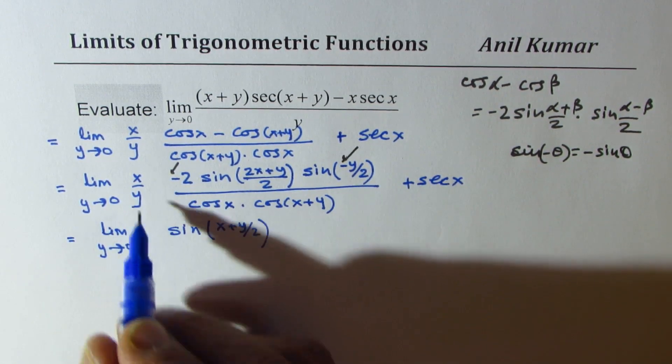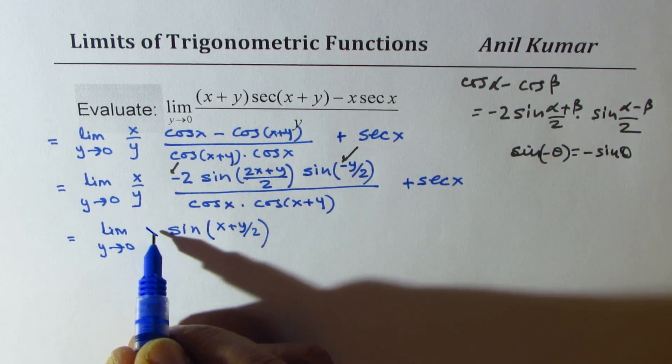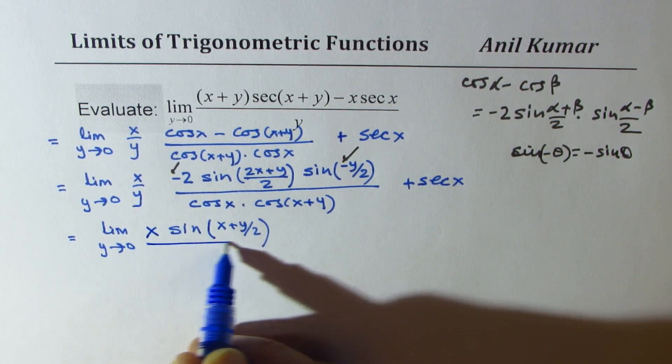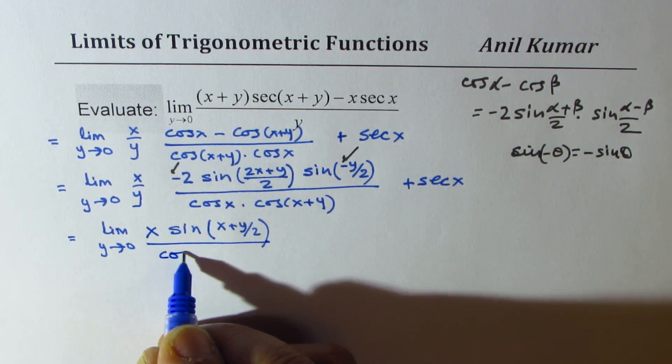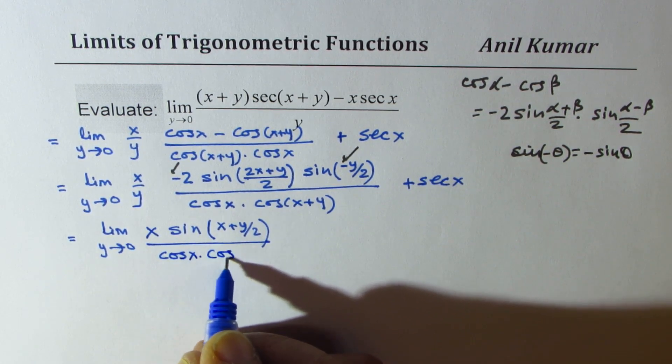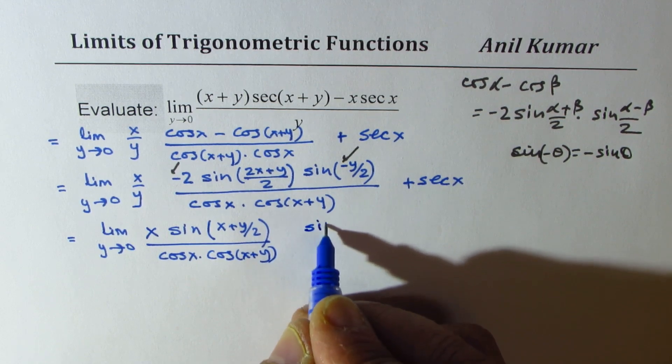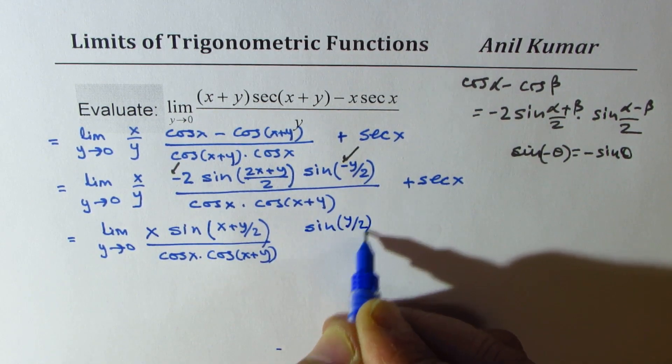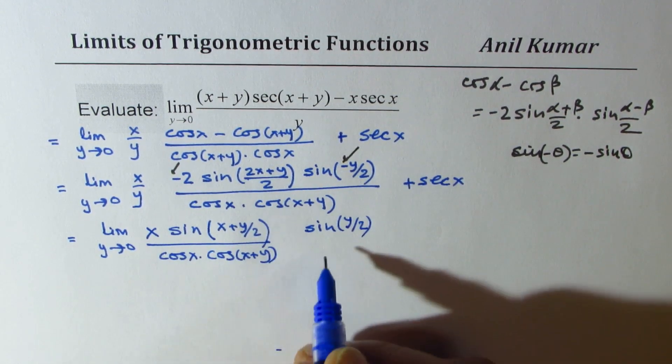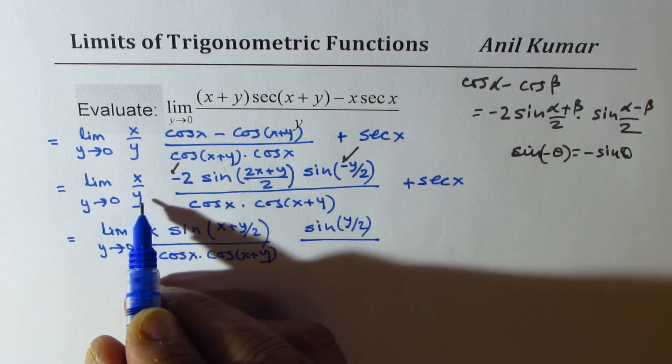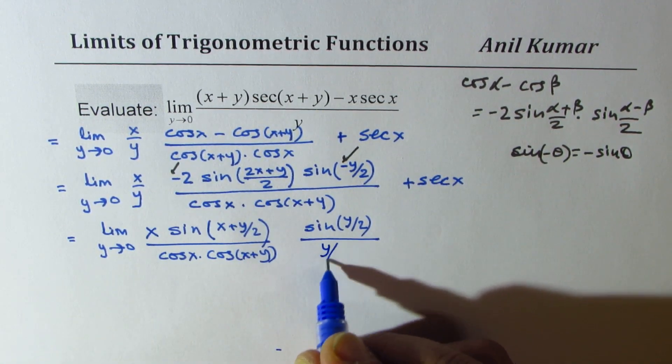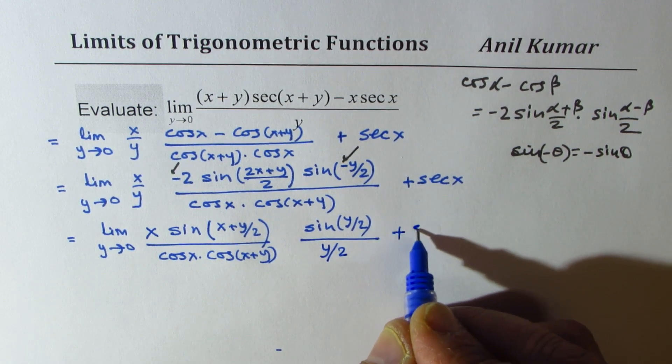So we have y here already. So I'm writing x here over cos of x times cos of x plus y. Here we have sine of y by 2, that negative has been taken care of, divided by this y over 2. Do you see that y over 2 plus secant x.